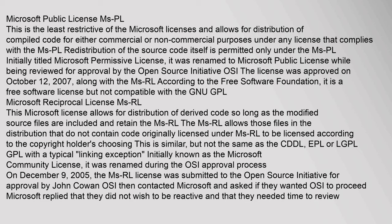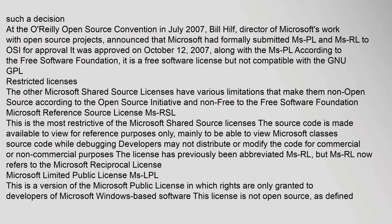Microsoft Reciprocal License (MsRL): This Microsoft license allows for distribution of derived code so long as the modified source files are included and retain the MsRL. The MsRL allows those files in the distribution that do not contain code originally licensed under MsRL to be licensed according to the copyright holder's choosing. This is similar, but not the same as the CDDL, EPL, or LGPL/GPL with a typical linking exception. Initially known as the Microsoft Community License, it was renamed during the OSI approval process on December 9, 2005. The MsRL license was submitted to the OSI for approval by John Cowan. OSI then contacted Microsoft and asked if they wanted OSI to proceed; Microsoft replied that they did not wish to be reactive and that they needed time to review.